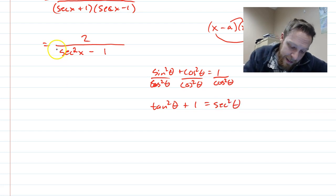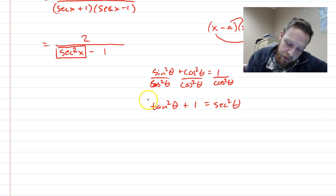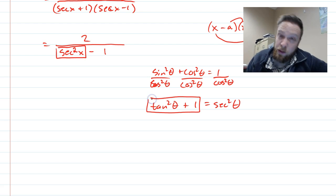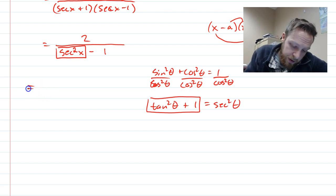Okay, so instead of secant squared theta, what I can actually write is tan squared theta plus one instead. And so we're substituting in an identity we know.